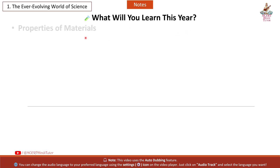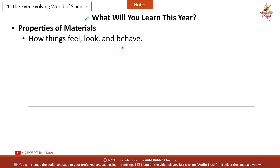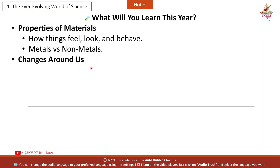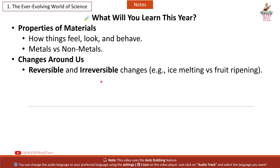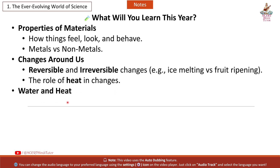What will you learn this year? Properties of materials — how things feel, look, and behave; metals vs. non-metals. Changes around us — reversible and irreversible changes, e.g., ice melting vs. fruit ripening. The role of heat in changes. Water and heat — evaporation, rain, and underground water flow.